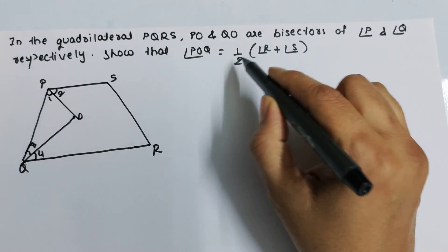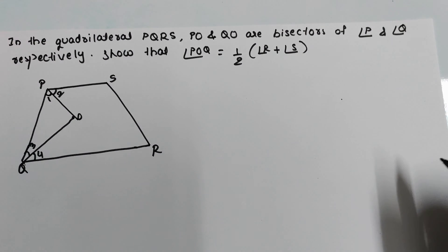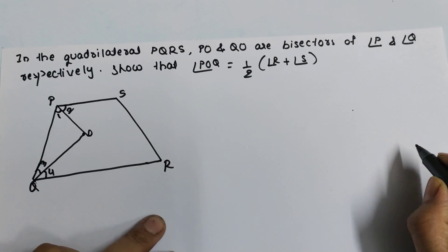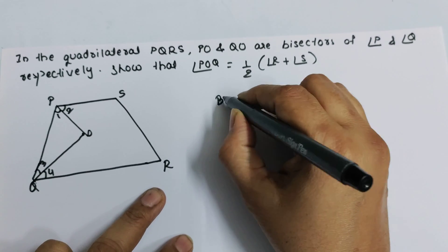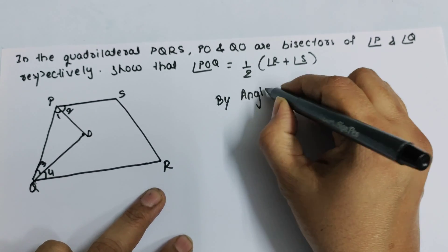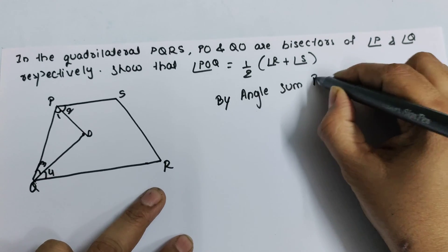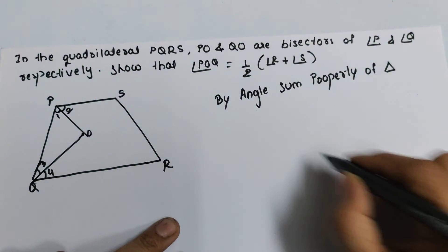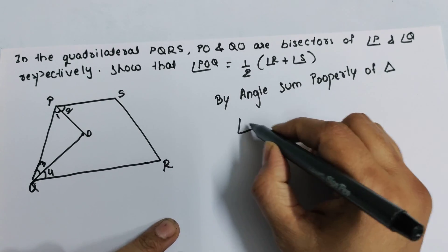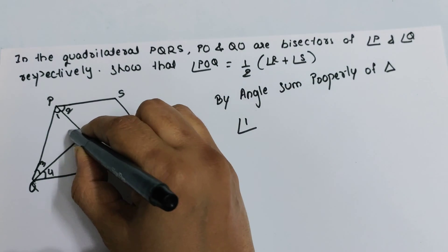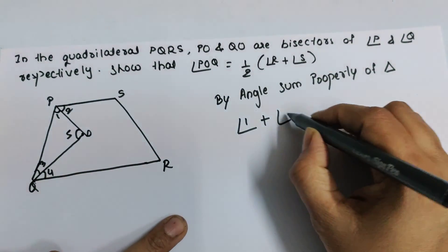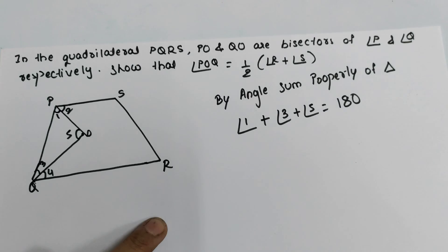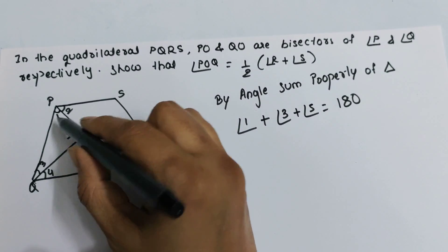We need to prove that angle POQ equals half of angle R plus angle S. First, we should know the angle sum properties of both triangle and quadrilateral. A quadrilateral is any closed figure with four sides. By the angle sum property of a triangle, angle one plus angle three plus angle five equals 180 degrees.